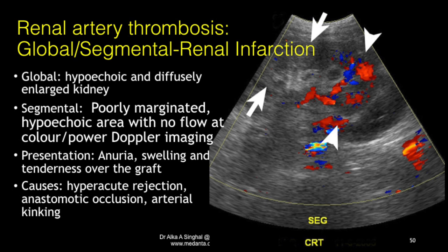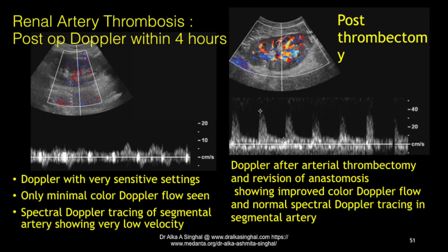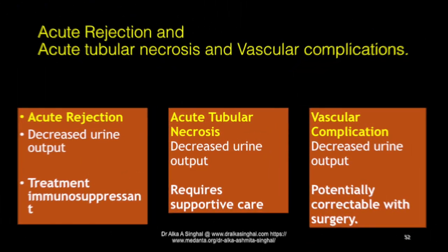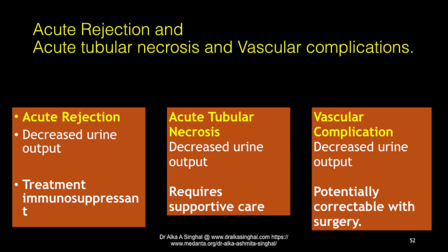Renal arterial thrombosis can be global when the main renal artery is occluded, or focal depending on which segmental arteries are thrombosed. Accordingly, there may be a wedge-shaped parenchymal infarct or total loss of the kidney, appreciated on color or power Doppler as an area of no flow. Urgent intervention is needed to rescue the kidney. A case is shown where there is hardly any flow seen in renal artery thrombosis; post-surgery the kidney has been reperfused showing normal diastolic flow. Key differentiation: acute rejection is managed by immunosuppressants; acute tubular necrosis requires supportive care; vascular complications often require urgent surgical intervention.